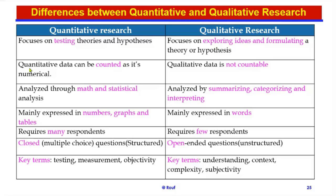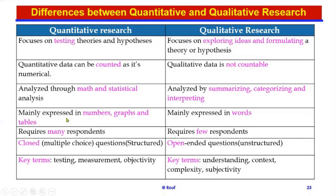Difference number two: quantitative data can be counted as it is numerical, whereas qualitative data is not countable. Difference number three: quantitative research is analyzed through mathematical and statistical analysis, while qualitative research is analyzed by summarizing, categorizing, and interpreting. Difference number four: quantitative research is mainly expressed in numbers, graphs, and tables.